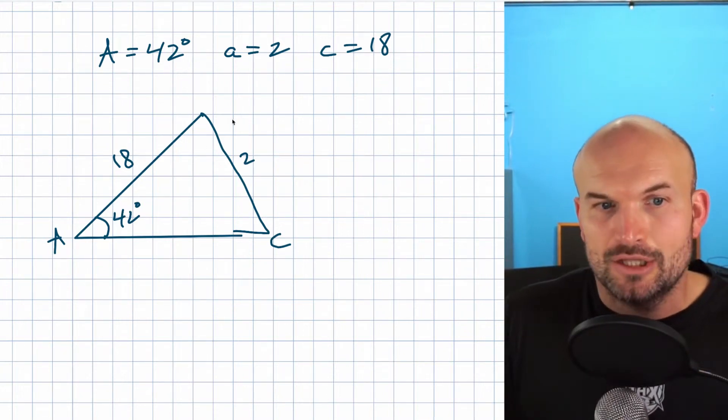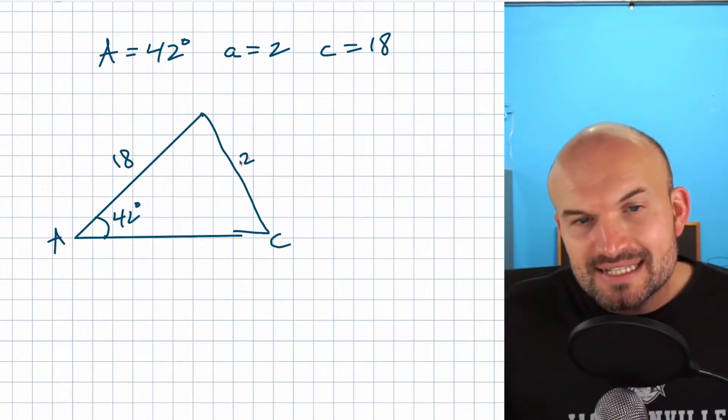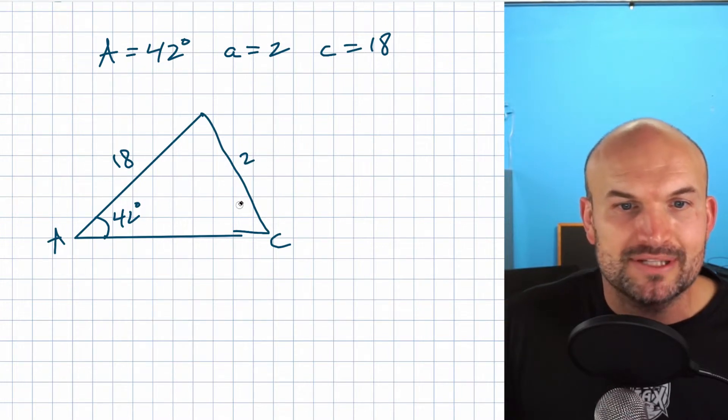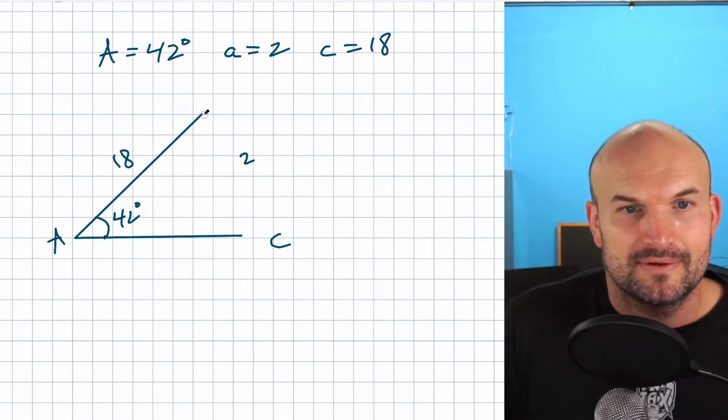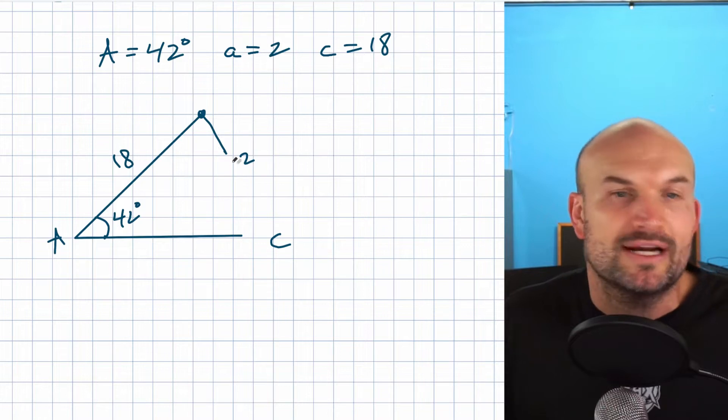If this is 18 long and we know that angle 42 degrees is between 0 and 90, it's impossible for this side length to be a 2. In reality, this probably is going to look something like this, and you can see, it doesn't matter how much I rotate this side length, we're never going to create a triangle.